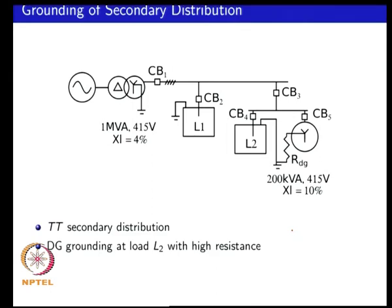If you look at this particular example, ignoring the DG for now, this is essentially a TT distribution secondary where the source is grounded directly to terra earth and each load has its own grounding electrode. Load 1 and load 2 ground wires are connected to earth. The DG is connected at load 2 with a resistance. So overall this is a system which has both TT aspects and also high resistance grounding aspects. In an actual system it is possible to have multiple grounding options present in the same system depending on your objectives.